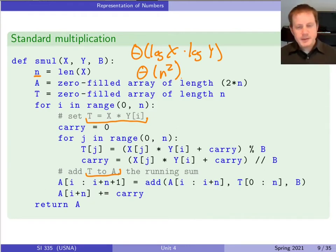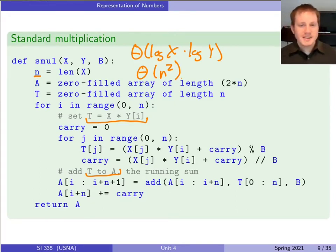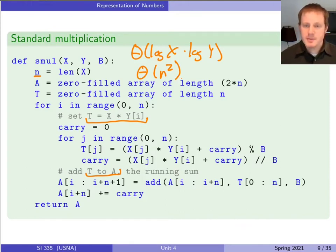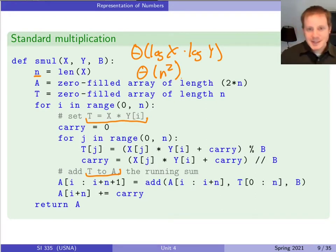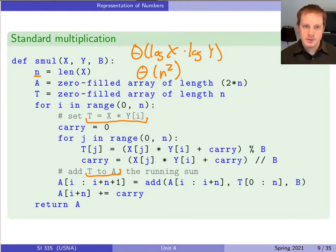Of course, we want to think about: is this the best possible? Could we improve on this? Notice it's a lot slower than addition. For the kind of numbers used in RSA — maybe with 1000 digits — adding 2000-digit numbers takes about 1000 steps, but multiplying 2000-digit numbers takes about a million steps. Scale that up to a million-digit numbers and it'd be seconds versus hours for addition versus multiplication. So we want to think about whether there's any faster way to do this.